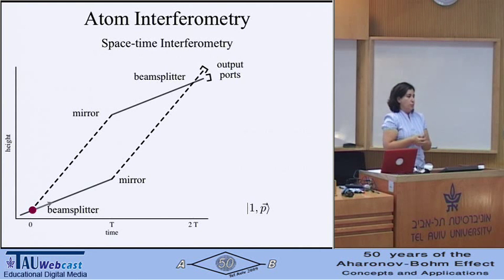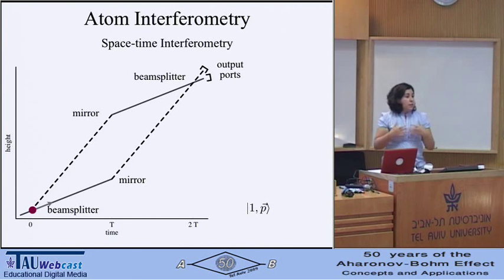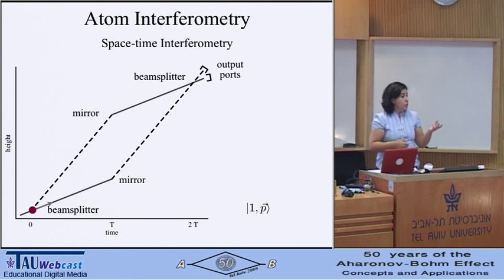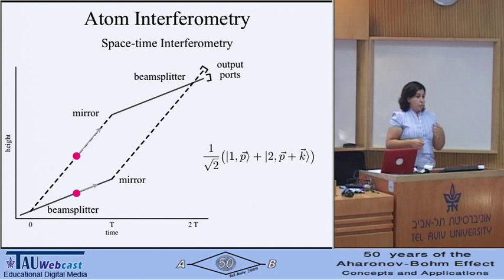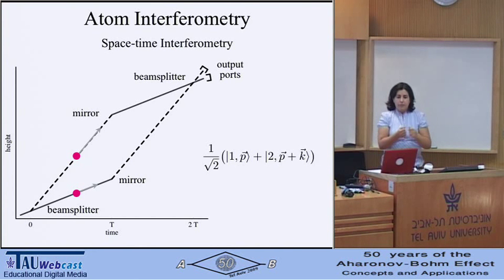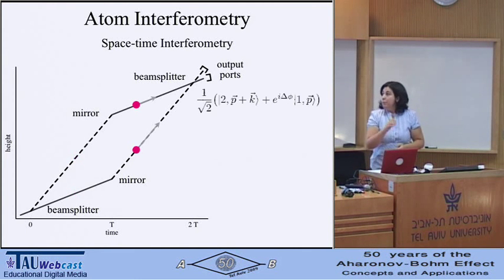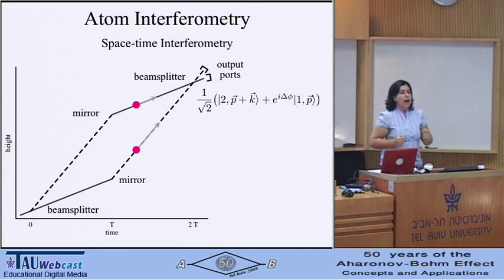Similarly in atom interferometry you separate an atom in space-time. An atom is launched with an initial momentum p, and at t equals zero you apply a beam splitter, splitting the wave function into an equal superposition: one with momentum p and another with increased momentum p plus k. The two wave packets start getting separated in the space-time diagram. At time T, mirrors flip the momenta of these states and the two states are made to reconverge, and after a final beam splitter they interfere.